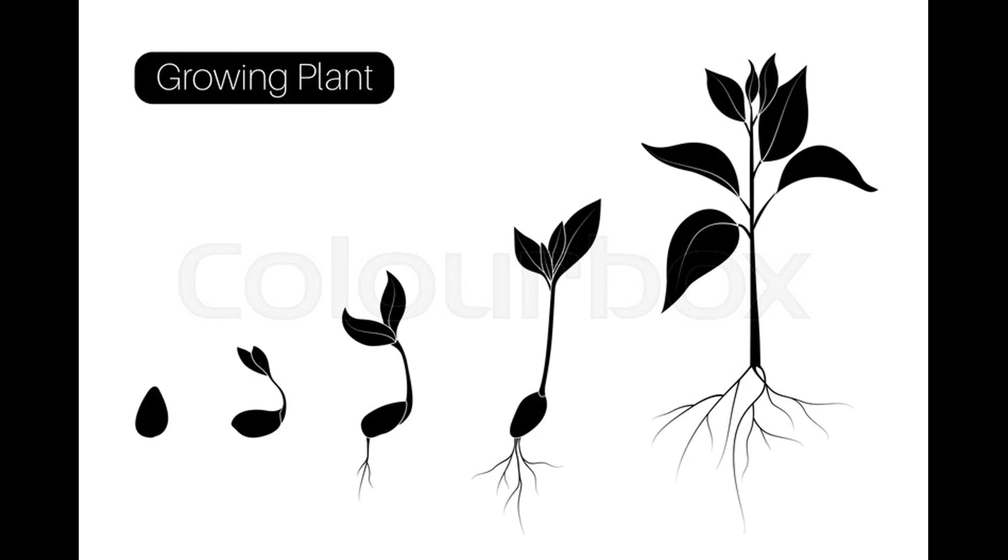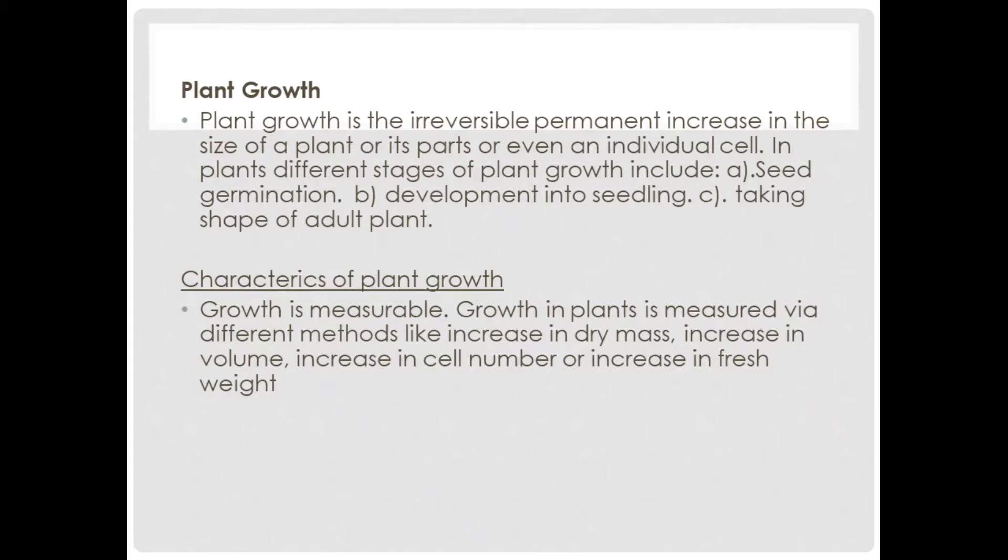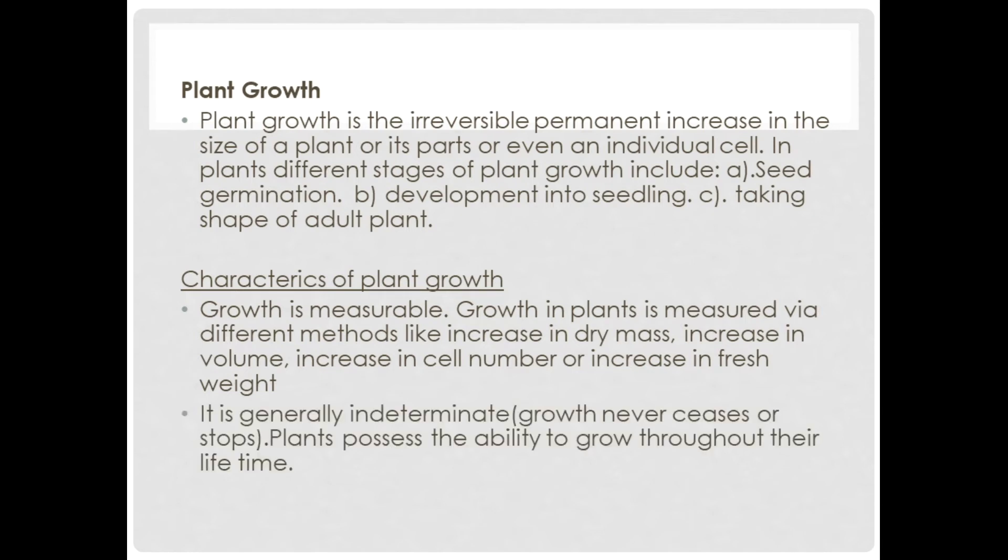Let's take a look at the characteristics of plant growth. Growth is measurable. Growth in plants is measured via different methods like increase in dry mass, increase in volume, increase in cell number, or increase in fresh weight. It is generally indeterminate. That is, growth never ceases or stops. Plants possess the ability to grow throughout their lifetime.